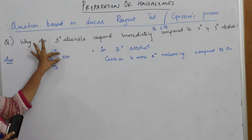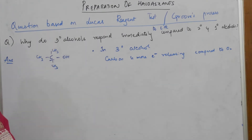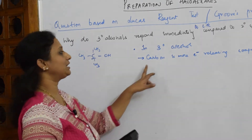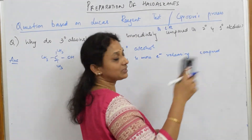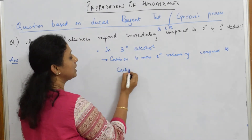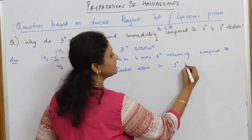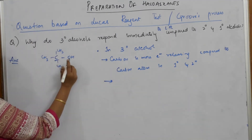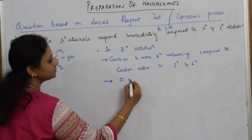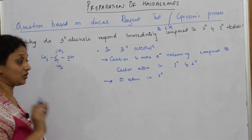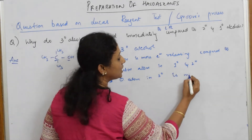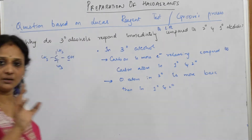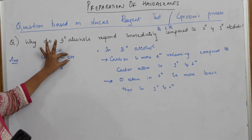The carbon in tertiary tries to release electrons toward the oxygen, which helps the replacement by Cl. So two important points: first, the carbon atom in tertiary is more electron-releasing compared to carbon in primary and secondary — because alkyl groups are electron-releasing. Second, the oxygen atom in tertiary alcohol is more basic than in primary and secondary.